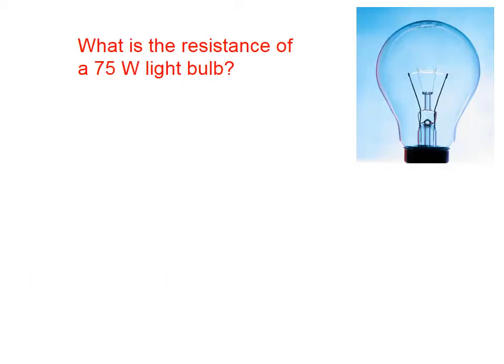Let's try another one. What is the resistance of a 75 watt light bulb? Since P equals I times delta V, and I equals delta V over R, that's Ohm's law.